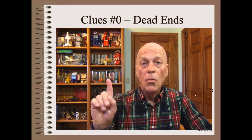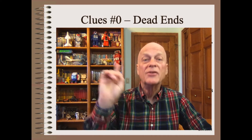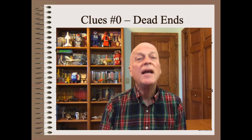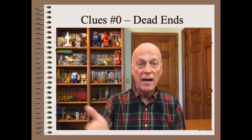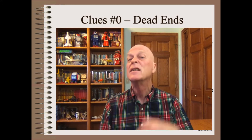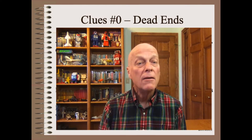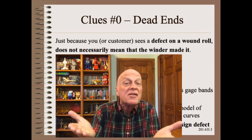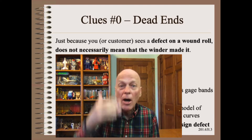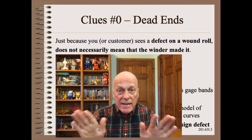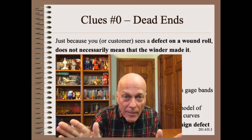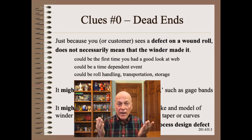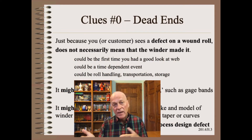This one single question, perhaps more than any others in this series, can easily lead one astray onto wrong paths and into dead ends. For example, just because you or your customer sees a defect on a wound roll does not necessarily mean that the winder made it. It could be a result of sample location, time dependence, or transportation.